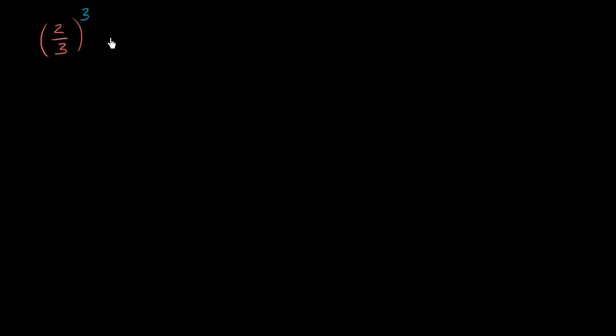And we've already learned there's two ways of thinking about this. One way is to say, let's take 3 2 thirds. So that's 1 2 third, 2 2 thirds, and 3 2 thirds. So that's 1 2 3 2 thirds. And then we multiply them,